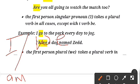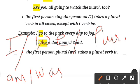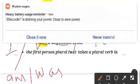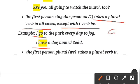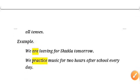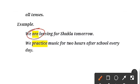For the first person: 'I' and 'we' are used. For 'I' we use 'am' and 'was,' and 'I' takes a plural verb in all cases except with the be-verb, where we always use 'am.' For example: 'I go to the park every day' and 'I have a dog named Jess.' For 'we,' we always use plural verbs — for example, 'We practice,' not 'We practices.'